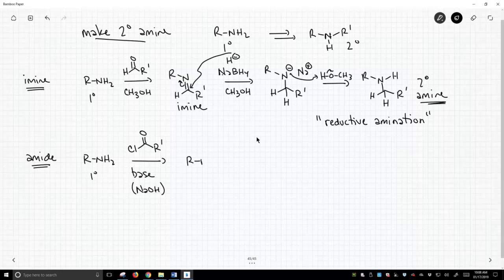And what we make, if we walk through that mechanism, and we're not going to here, but simply attack by the nitrogen, make the tetrahedral intermediate, pull in those electrons back down, kick out the chloride, and we deprotonate our nitrogen. And we form an amide.